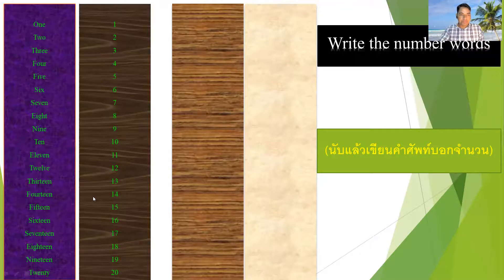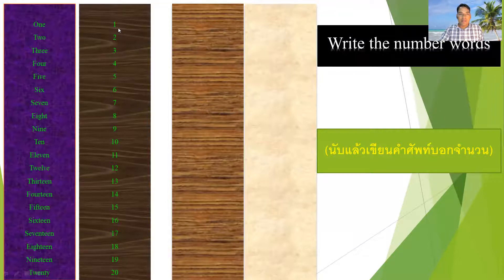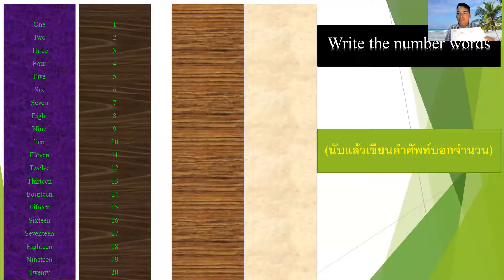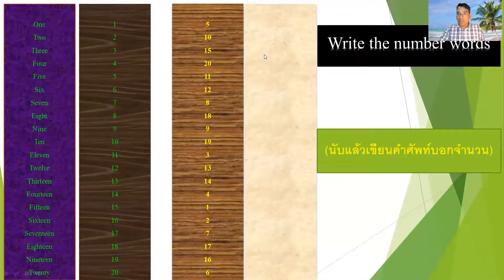So 13, 14, 15, 16, 17, 18, 19 — you only need to add the base word and then T-E-E-N. Numbers go: one, two, three, four, five, six, seven, eight, nine, ten, eleven, twelve, thirteen, fourteen, fifteen, sixteen, seventeen, eighteen, nineteen, and twenty. Now we have to practice — they have written the number and we have to write the word. Let's see the numbers: 5, 10, 15, 20, 11, 8, 18, 9, 19, 3, 13, 14, 4, 1, 2, 7, 17, 16, and 6.